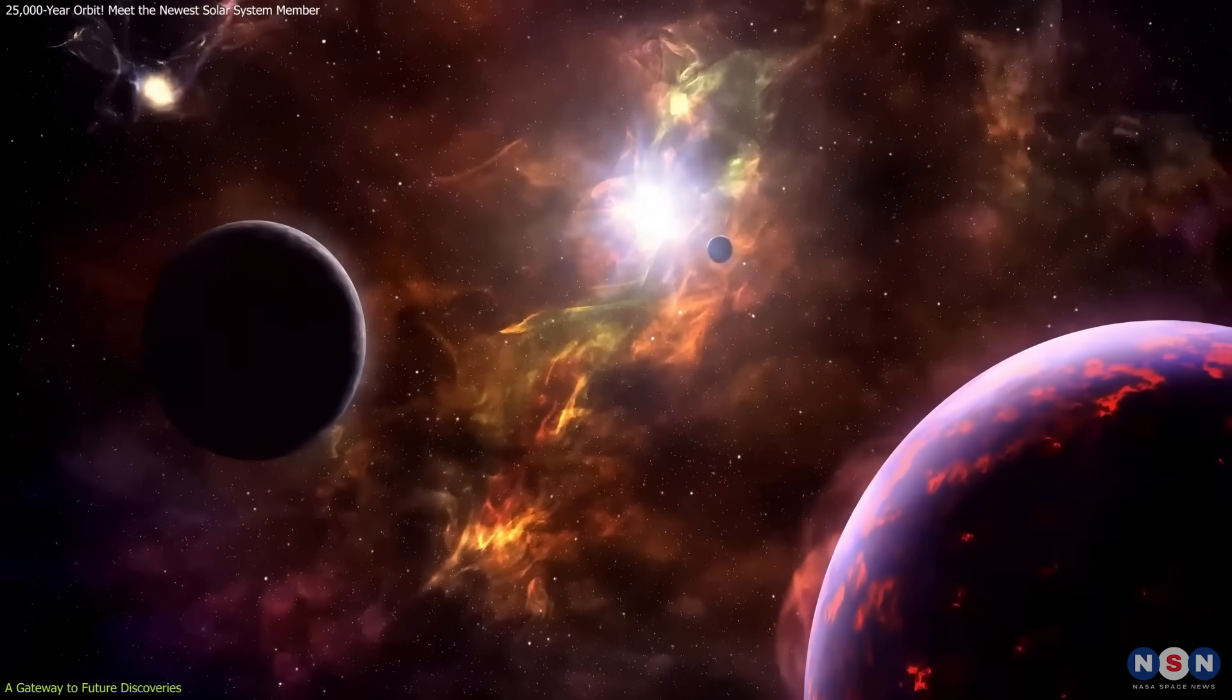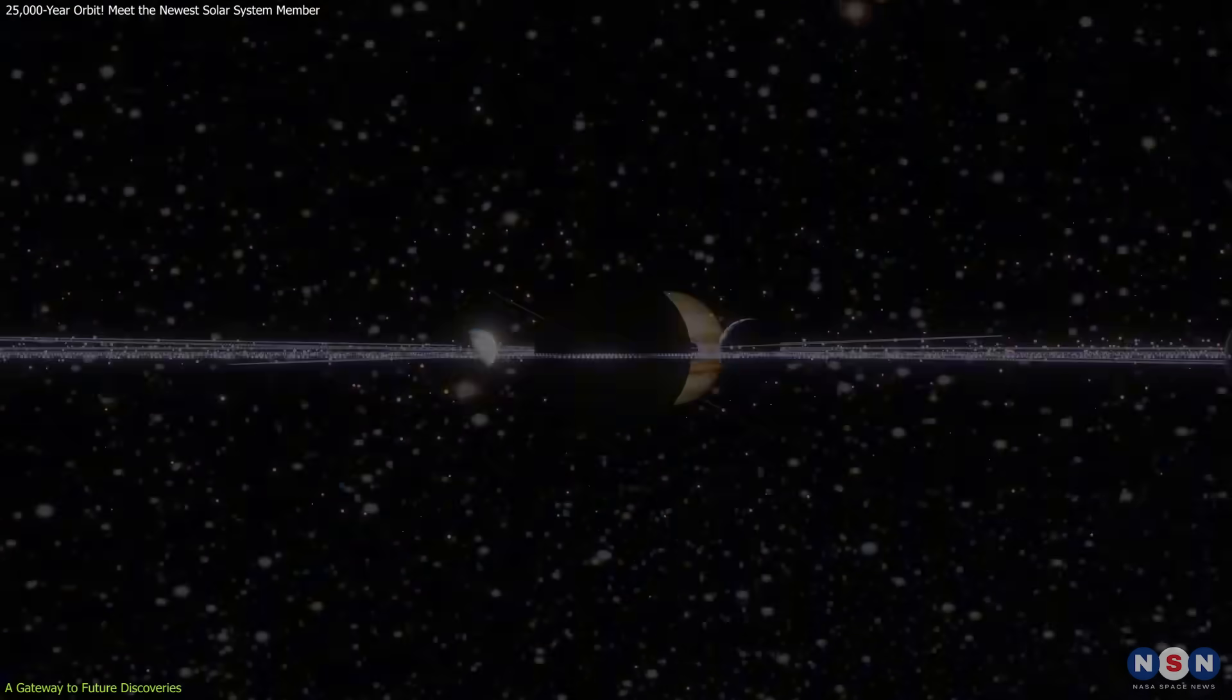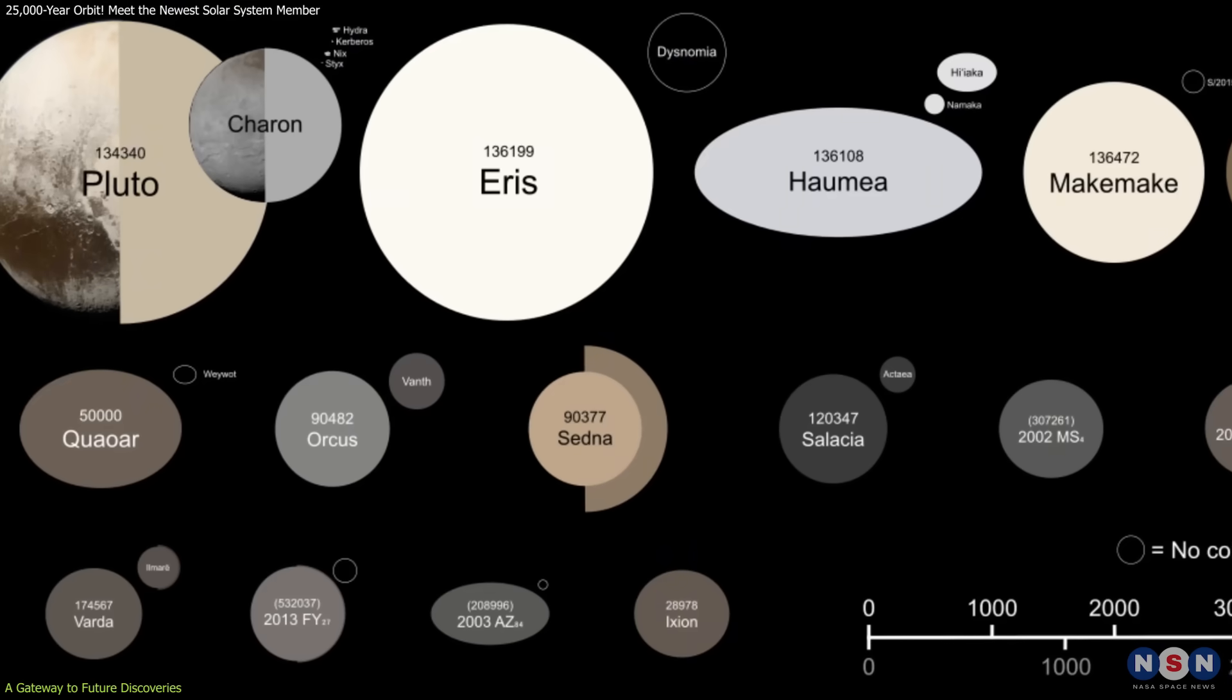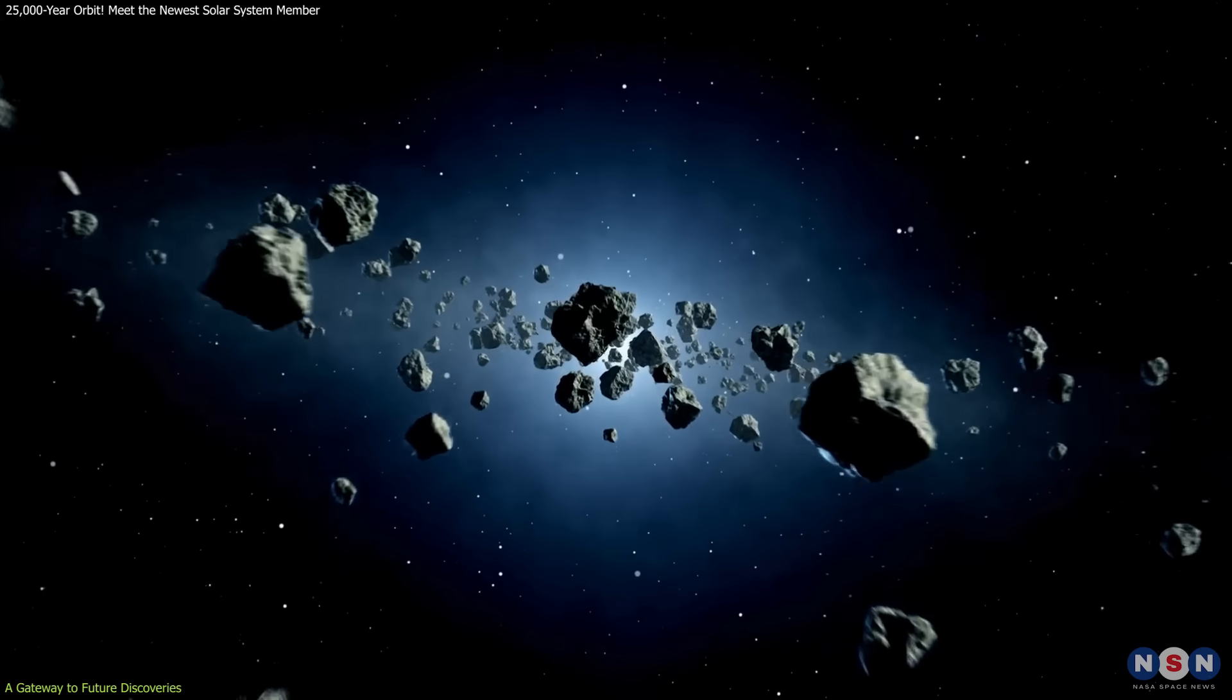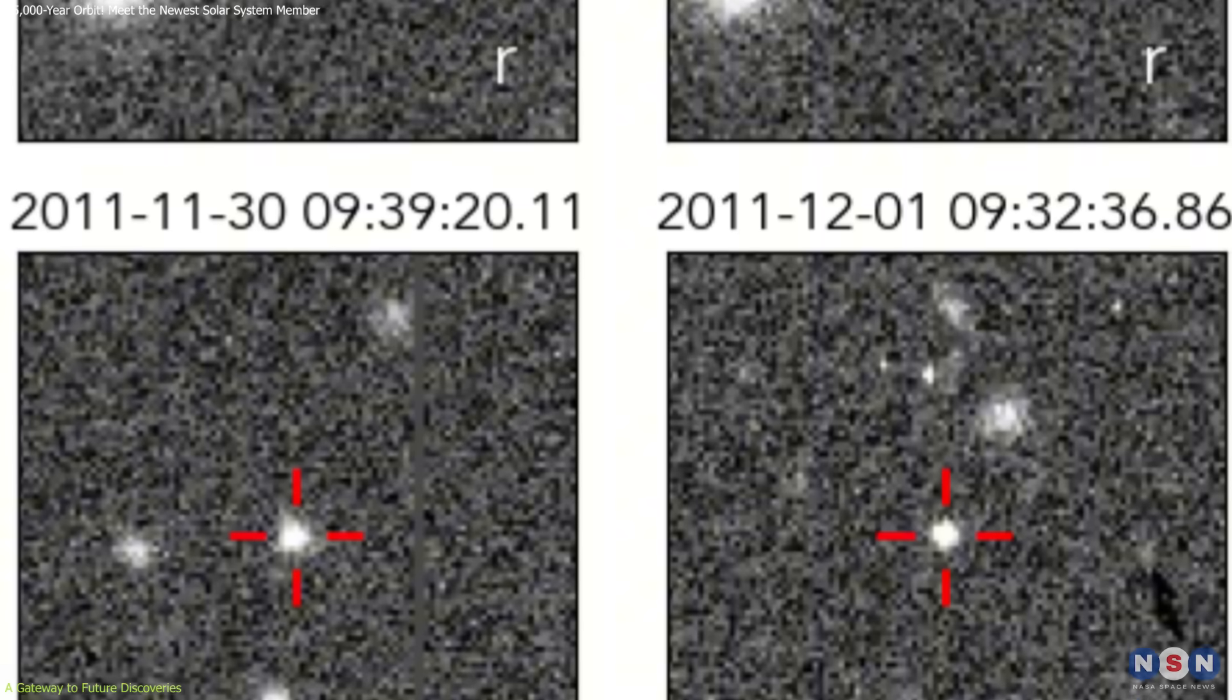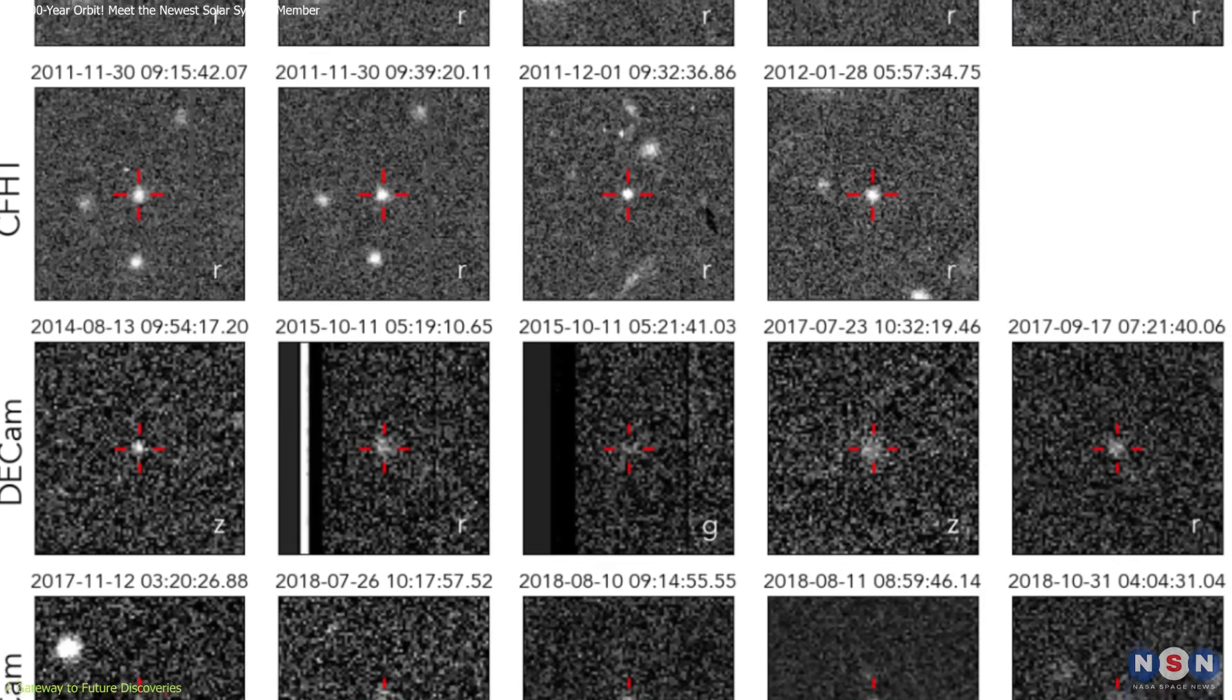As we look ahead, the promise of new discoveries is closer than ever. The upcoming Vera C. Rubin Observatory will play a key role in uncovering distant solar system objects. Its Legacy Survey of Space and Time, LSST, is expected to dramatically increase the number of known TNOs and improve our understanding of their distribution, sizes, and orbits. And perhaps the most exciting aspect? The tools to discover the next 2017 OF-201 aren't reserved for professional astronomers alone.